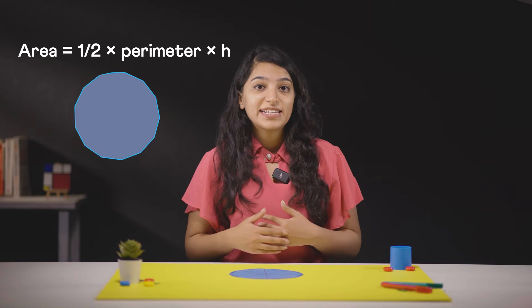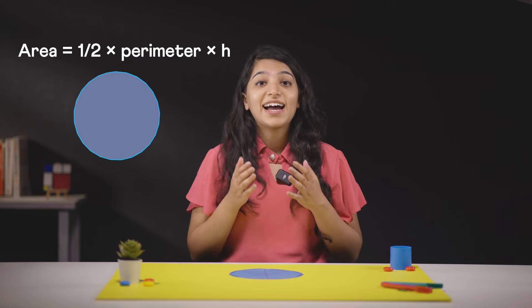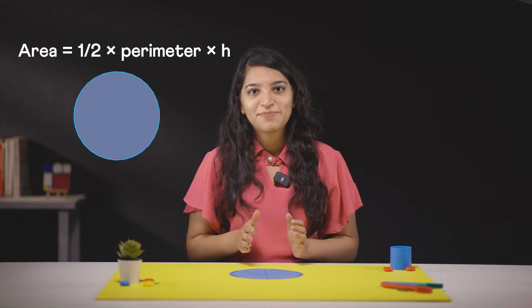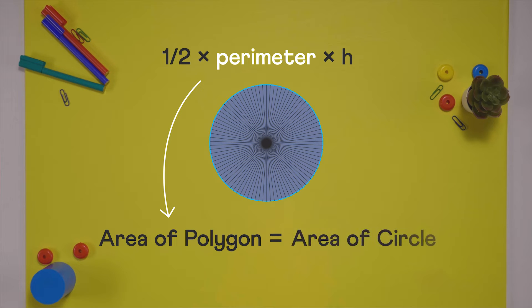Now, as we keep increasing the number of sides of the polygon, it will eventually turn into a circle. It has to. There is no escape. At that point, the area of the polygon will become equal to that of the circle.